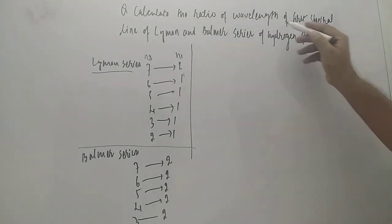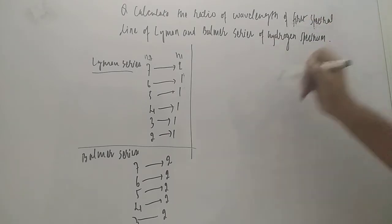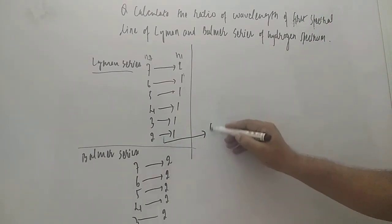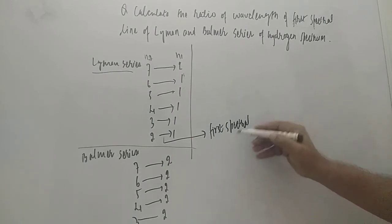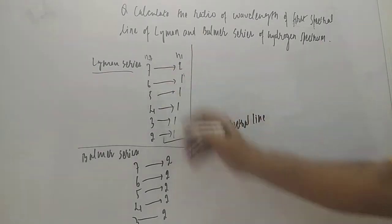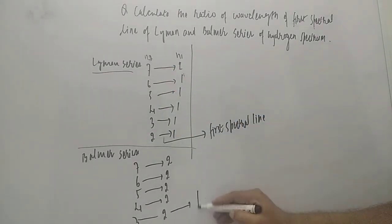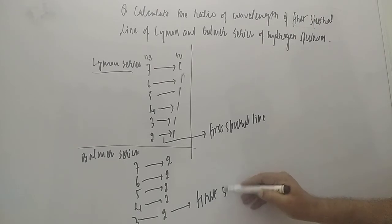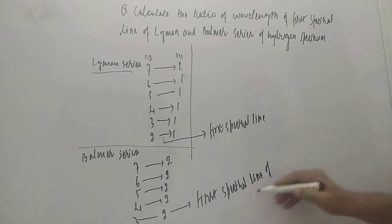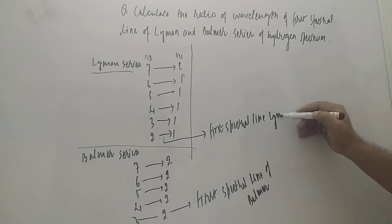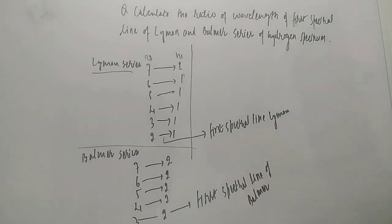Now, which one is the first spectral line? The smallest transition is the first spectral line. For Lyman series, the first spectral line is 2 to 1. For Balmer series, the first spectral line is 3 to 2.